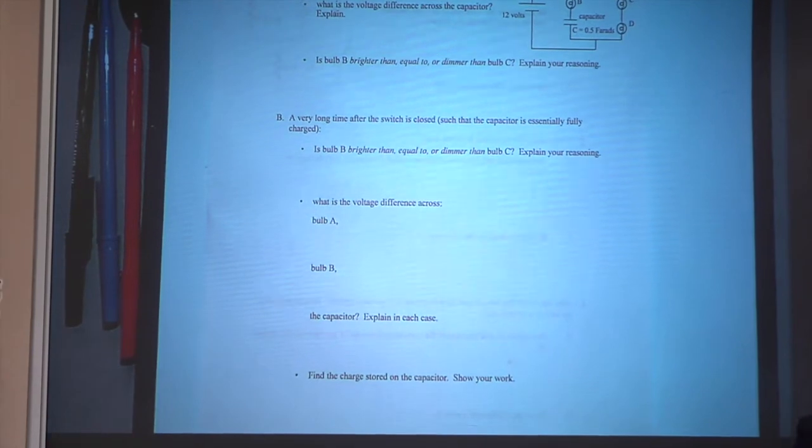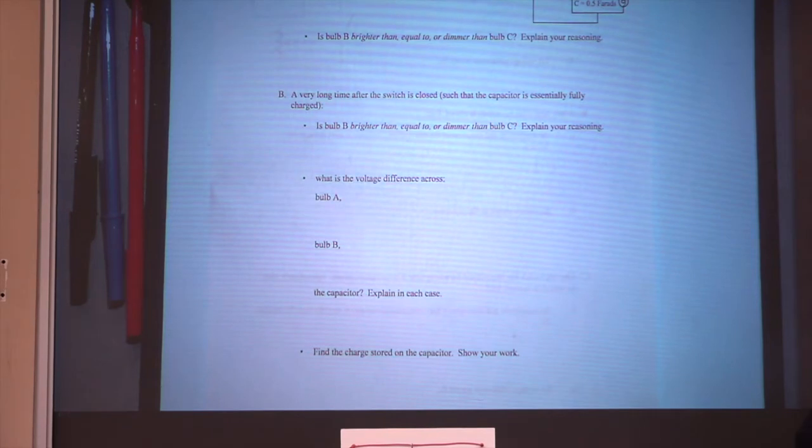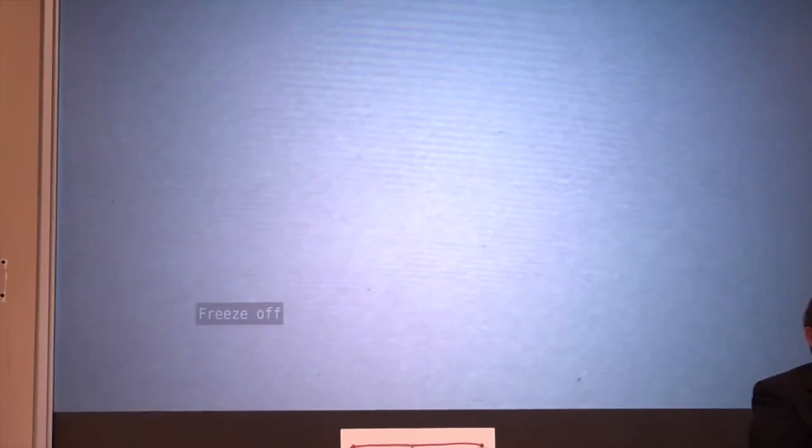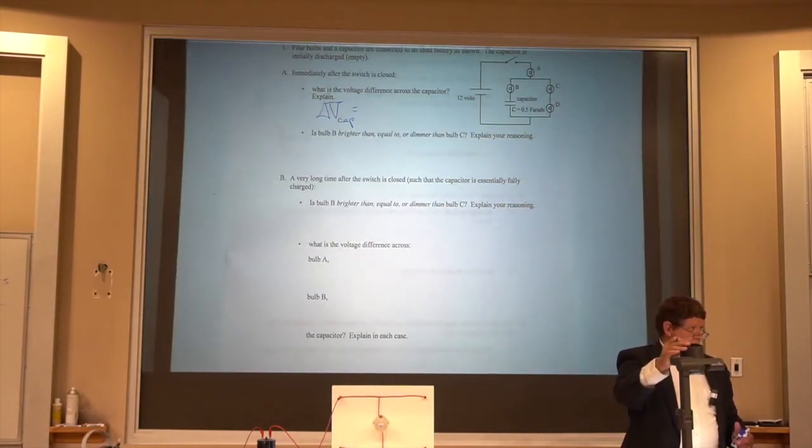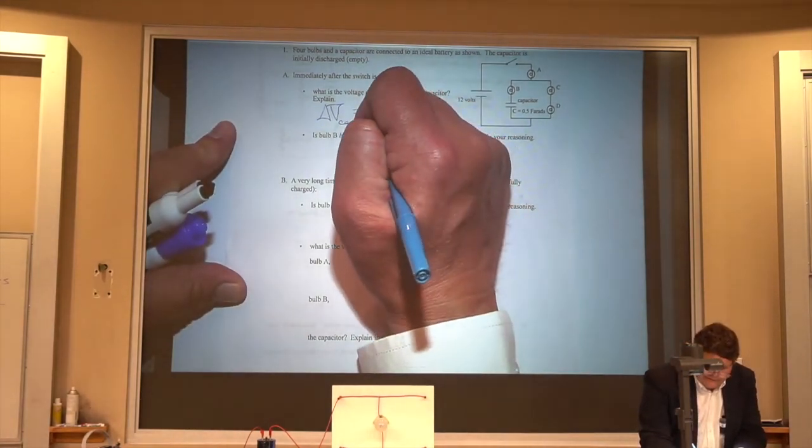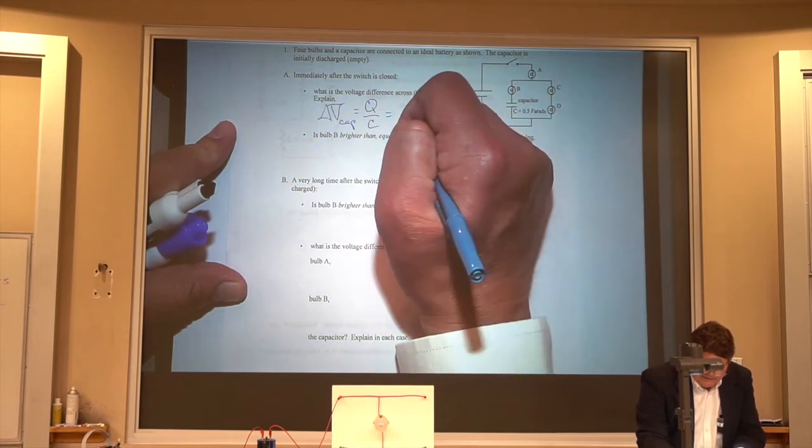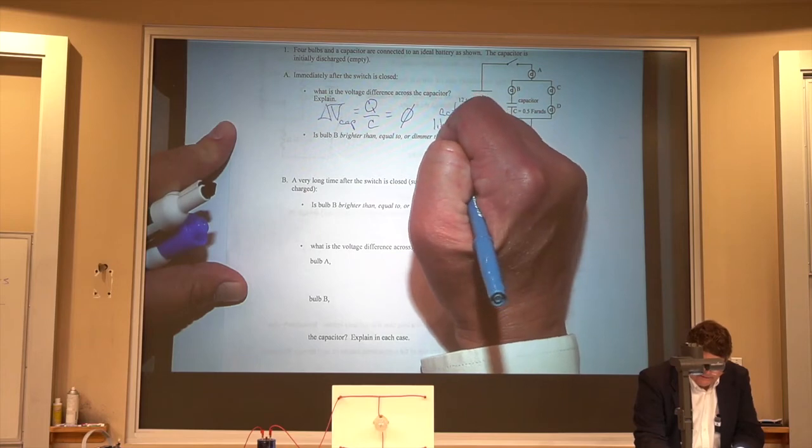So let's go and do your homework for you here. What is the voltage difference across the capacitor? The voltage difference across the capacitor is Q over C, but that's going to be zero. So it acts like a wire.